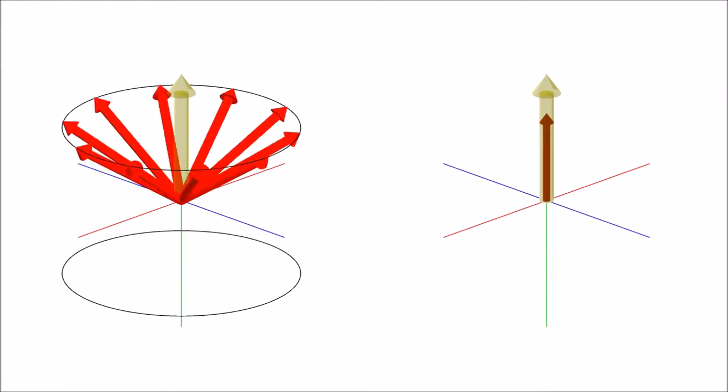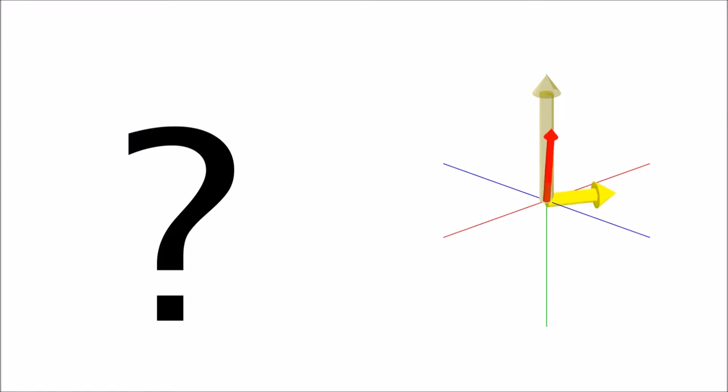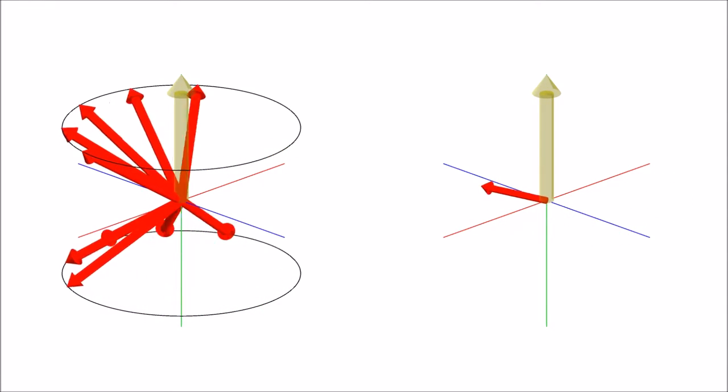Let's watch another 90 degree pulse, but this time the T1 of the material is very, very long. T2 decay still occurs, but the T1 is so long that the material doesn't regain its longitudinal relaxation.